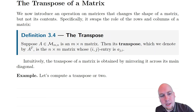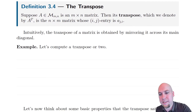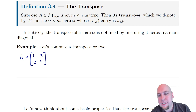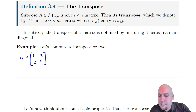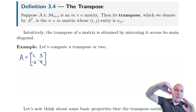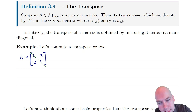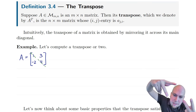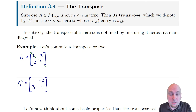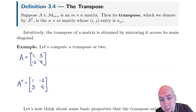Let's do a couple of quick examples to make sure we understand how to compute a transpose. The way to think about this is: if you're given some matrix — say 1, 3, minus 2, 4 in this case — then the way to compute the transpose is you're interchanging rows and columns. One way to think about that is you're reflecting the matrix across the main diagonal. I've drawn a green line here, and I'm just going to imagine reflecting the matrix across that green diagonal line. Anything on that diagonal — the entries 1 and 4 — they just stay where they are.